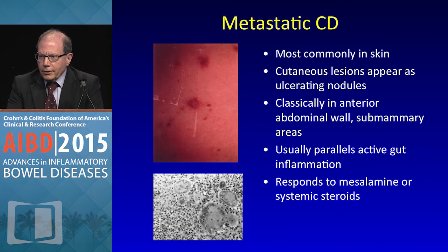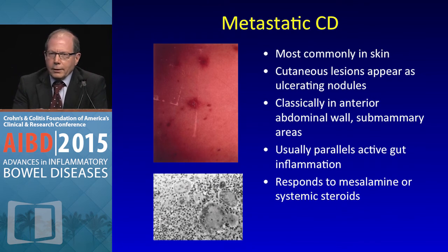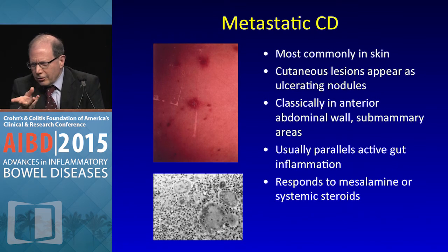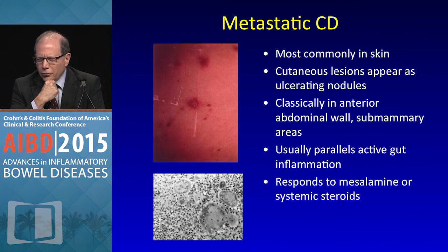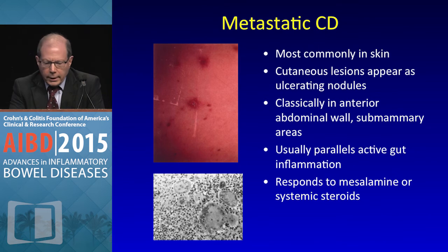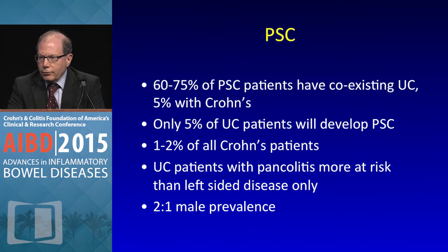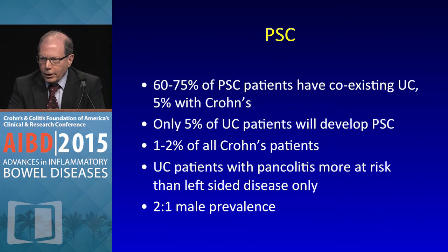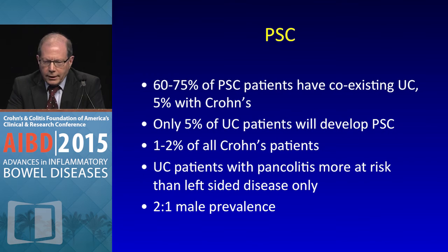Metastatic Crohn's disease is very interesting — most commonly presents in the skin as ulcerating nodules that can sometimes be hard to distinguish from erythema nodosum or beginning pyoderma. It usually occurs on the anterior abdominal wall, parallels gut inflammation, and typically responds to steroids and sometimes even 5-ASA drugs.